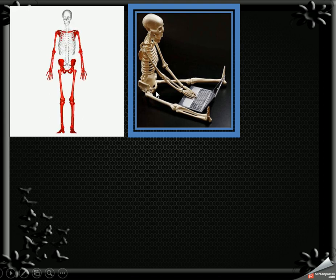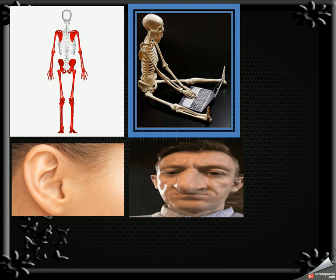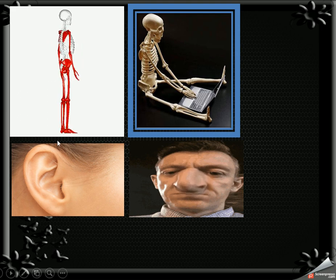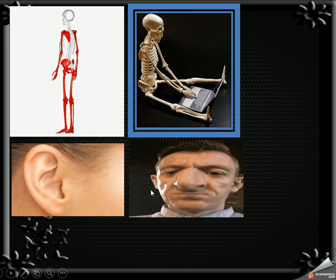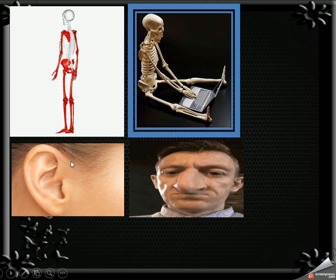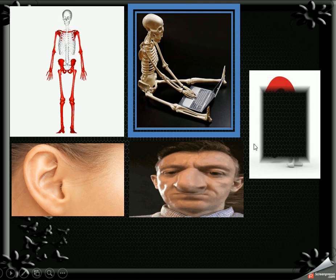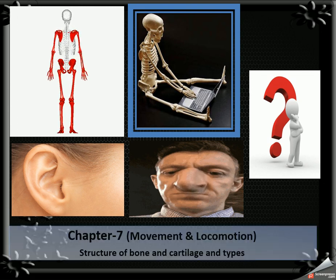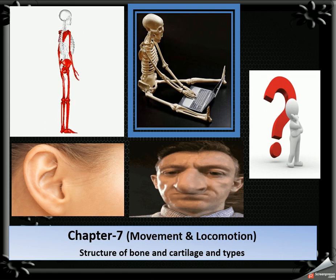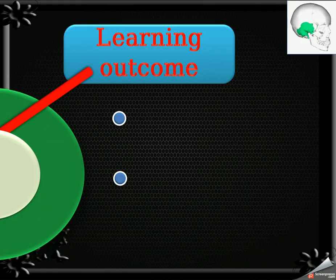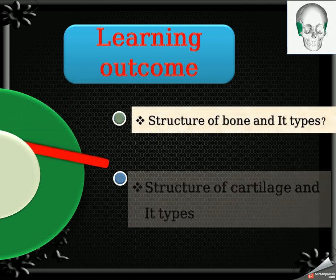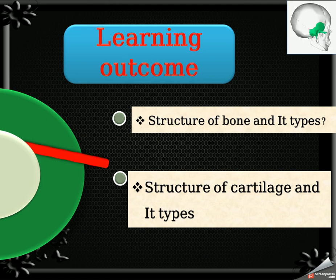This is our skeletal system. The skeletal system is made up of two parts: one is bones and another is cartilage. This is the pinna and this is the nose — bones and cartilage. Today we are going to learn about the structure of bones and cartilage and their types. Chapter number seven: Movement and Locomotion. Learning outcomes today: structure of bones and its types, and structure of cartilage and its types.